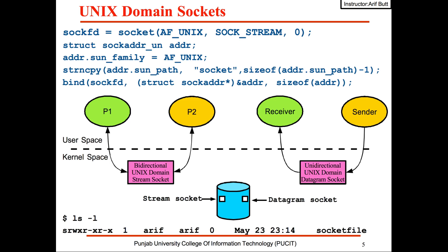The server process binds the socket descriptor with this address using the bind system call. After this, the resulting path name of the socket file is visible in the file system. If you run the command ls -l, you will see the path name with a socket special file indicator.